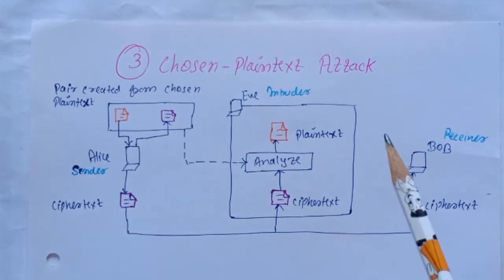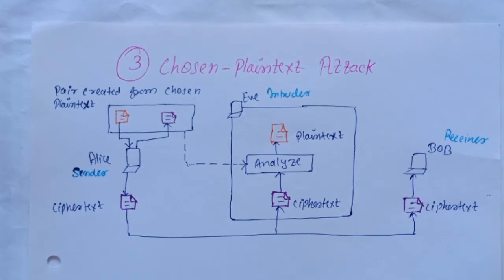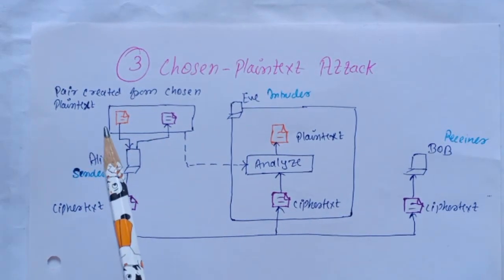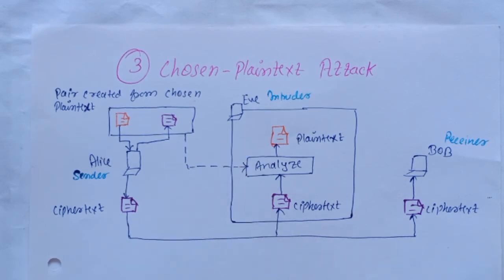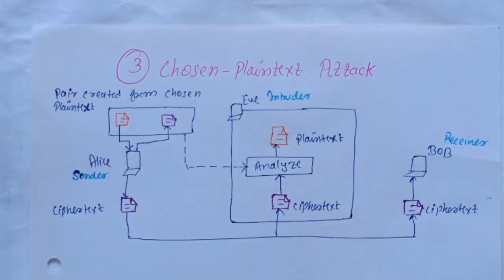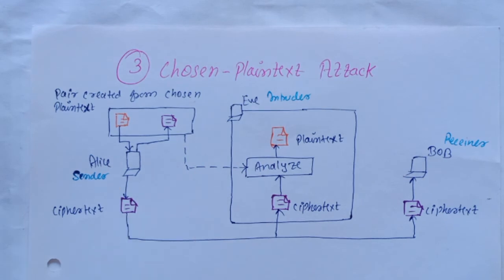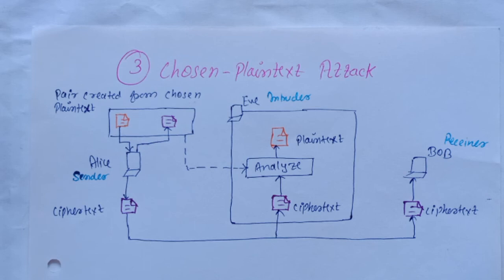Next is chosen plaintext attack. It is very much similar to the known plaintext attack, but here the plain text and ciphertext pairs have been chosen by the attacker herself. This can happen when Eve has access to Alice's computer. She can choose some plain text and intercept the created ciphertext.